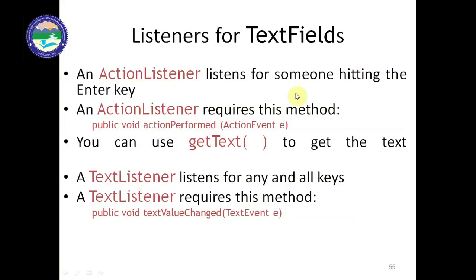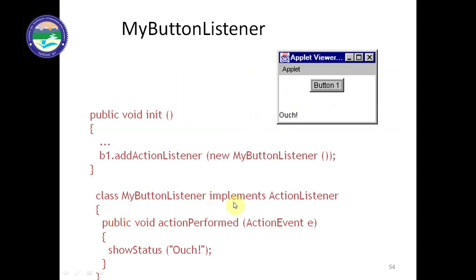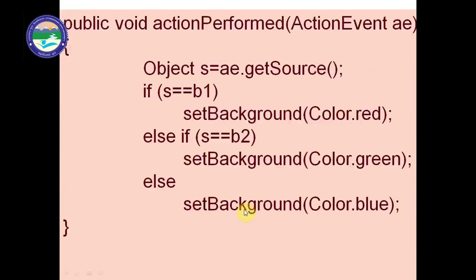In the previous example, 'this' was used because the same class implements ActionListener. But here we have a different class — MyButtonListener — implemented by ActionListener, so we pass the object of that different class: 'new MyButtonListener'. Inside the MyButtonListener class we also write 'public void actionPerformed(ActionEvent e)' and display a message. The actionPerformed function is the same in both approaches.